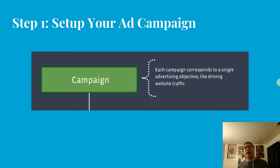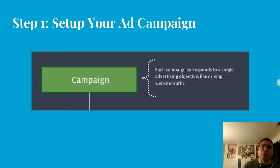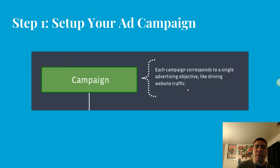Step one in setting up ads on Instagram is setting up your ad campaign. Think of this like a big bank: the campaign is like the headquarters — it controls all the divisions and branches below it. In the campaign, you choose the objective, just like a headquarters sets its goals. Some available objectives include boosting a post, getting more page likes, sending people to your website, collecting leads using Facebook's built-in lead form, or getting conversions — people who purchase something on your website.